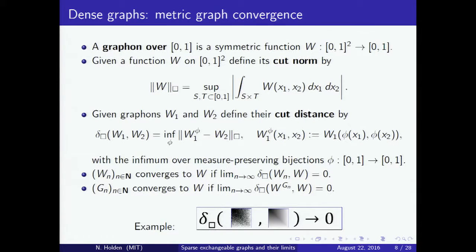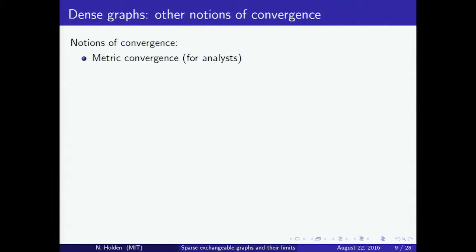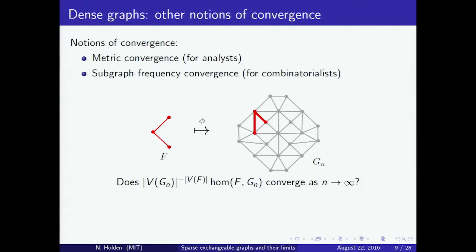Similarly, a sequence of graphs is defined to be convergent if the associated graphons converge. Metric convergence is not the only way to define convergence of graphs — it's also possible to look at convergence of subgraph frequencies. We imagine that F is some fixed graph and we look at maps φ from the vertices of F to the vertices of Gn, requiring that if two vertices are connected in F they are also connected in Gn. A graph has convergent subgraph frequencies if the normalized number of such maps converges for any graph F.